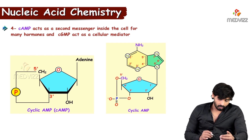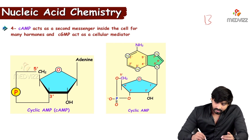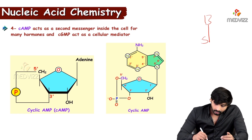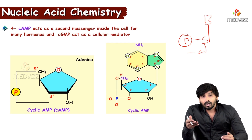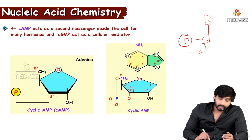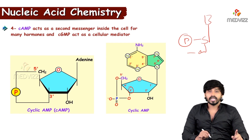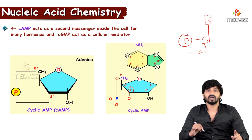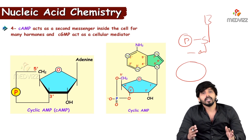In the cyclic form, the nucleotide has a base, sugar, and phosphate. The phosphate has oxygen valencies, and one oxygen valency reacts with the hydroxyl group on the third carbon of the sugar. In the picture, the OH group at the third carbon reacts with the oxygen valency of the phosphate attached to the fifth carbon of the sugar, forming a cycle — that is why it is called cyclic AMP.